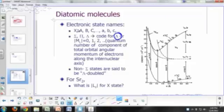you can also specify a code for big lambda here, which is the absolute value of big M sub L. M sub L is just the Z component of the total orbital angular momentum of the electrons.